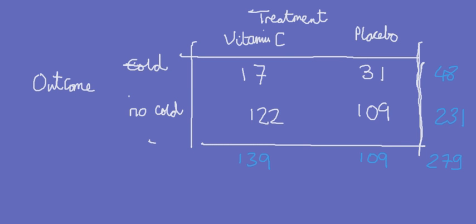We're talking about log-linear models as an extension of the chi-square test of independence, otherwise known as crosstabs analysis. To remind you how it goes, here is an experiment done on French skiers.